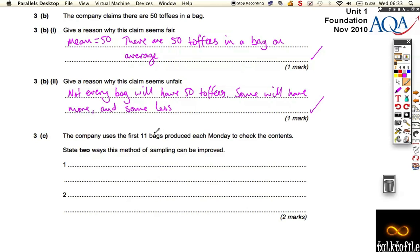Now, the company uses the first 11 bags produced each Monday to check the contents. So every Monday, they take 11 bags, the first 11 bags produced to check them. And now we want to say two ways that we can improve that. Well, there's lots of different answers you can do for this.